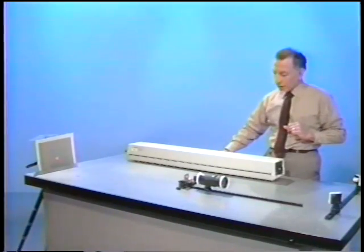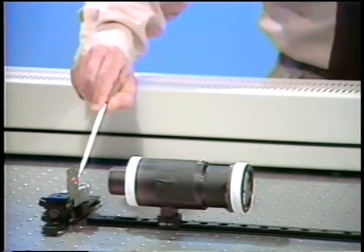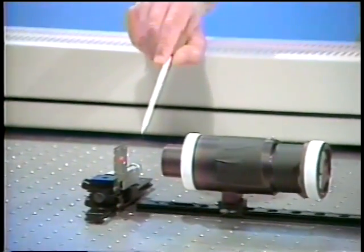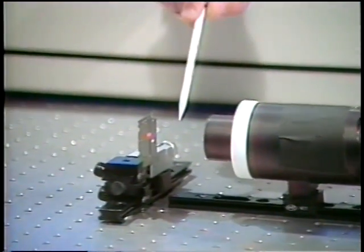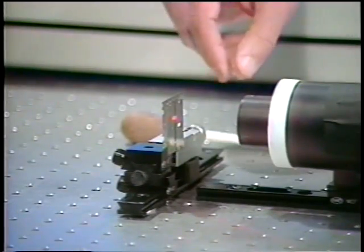Now let's look at this two-dimensional aperture here. It's made of two pairs of slits, a fixed one and an adjustable one. And the adjustable one is behind the fixed one.